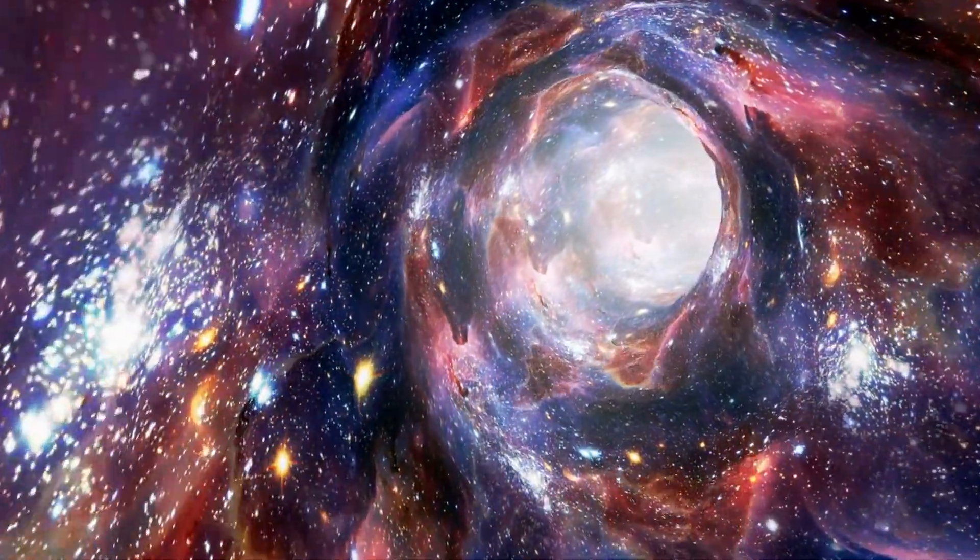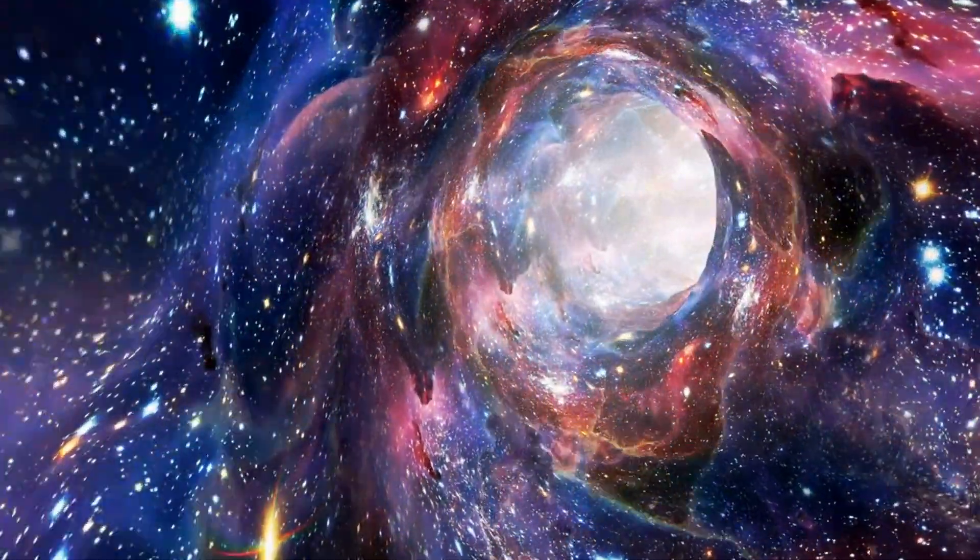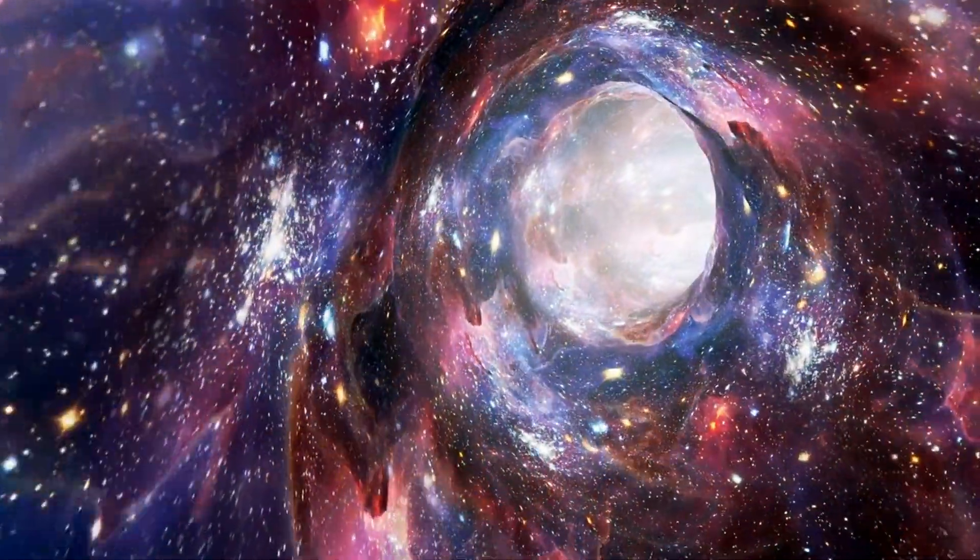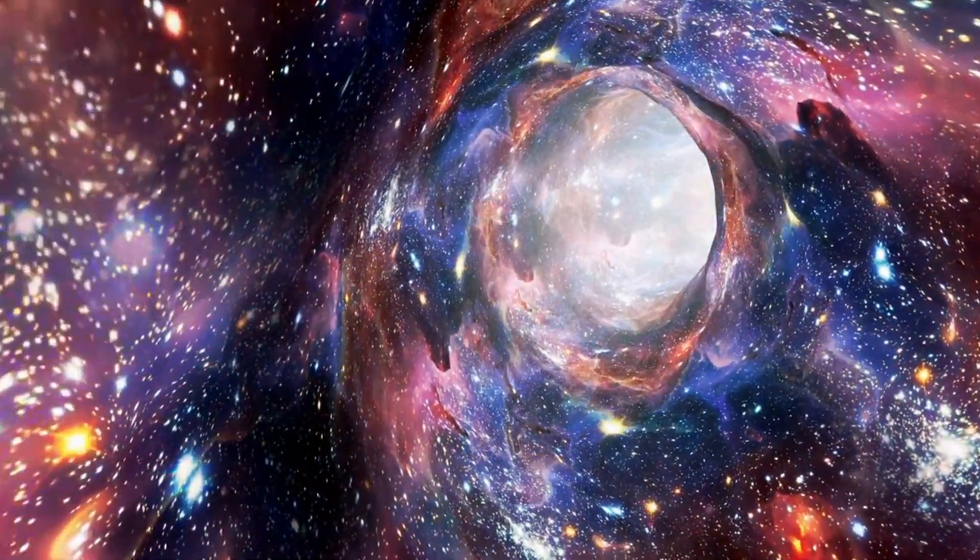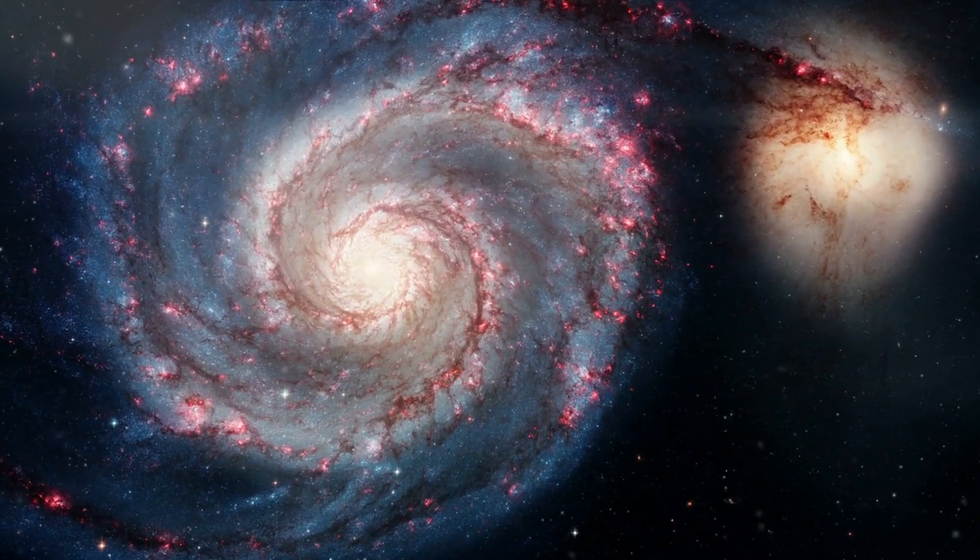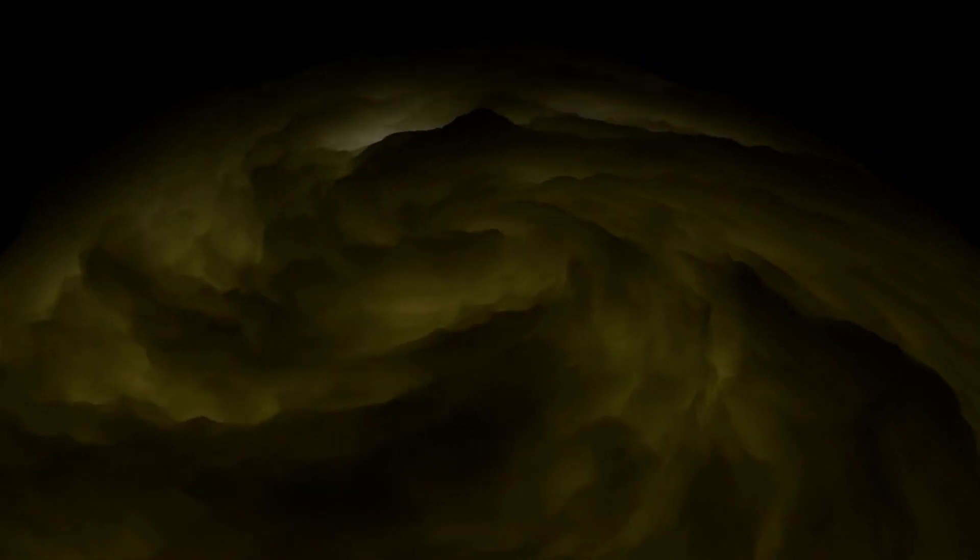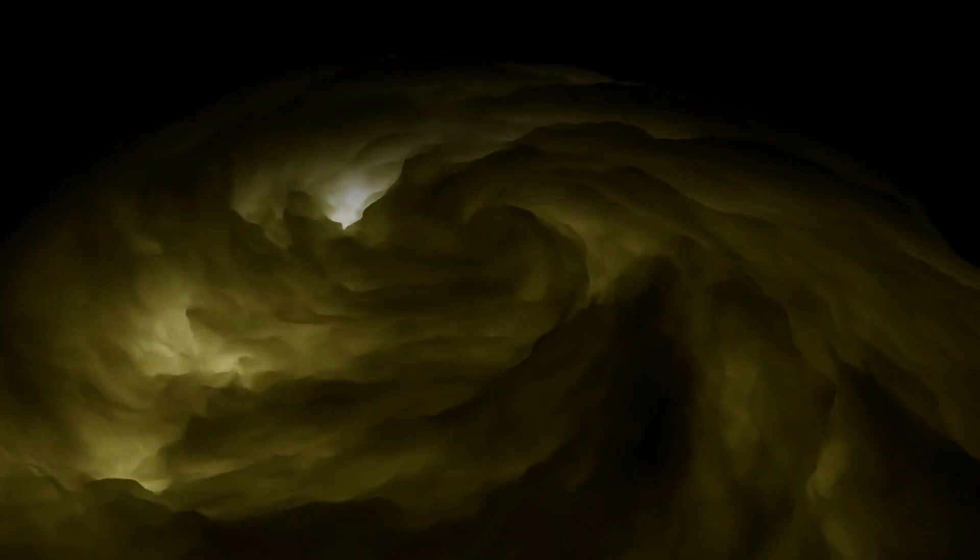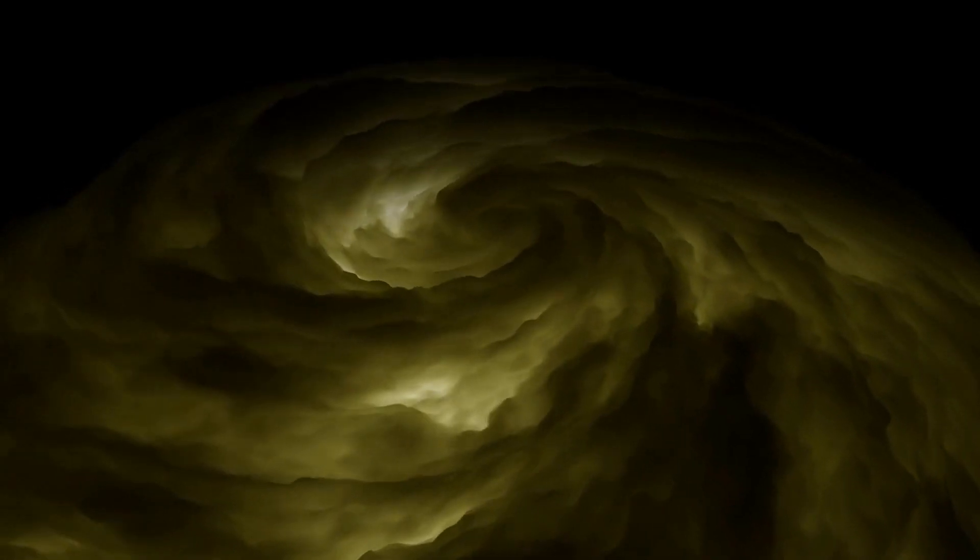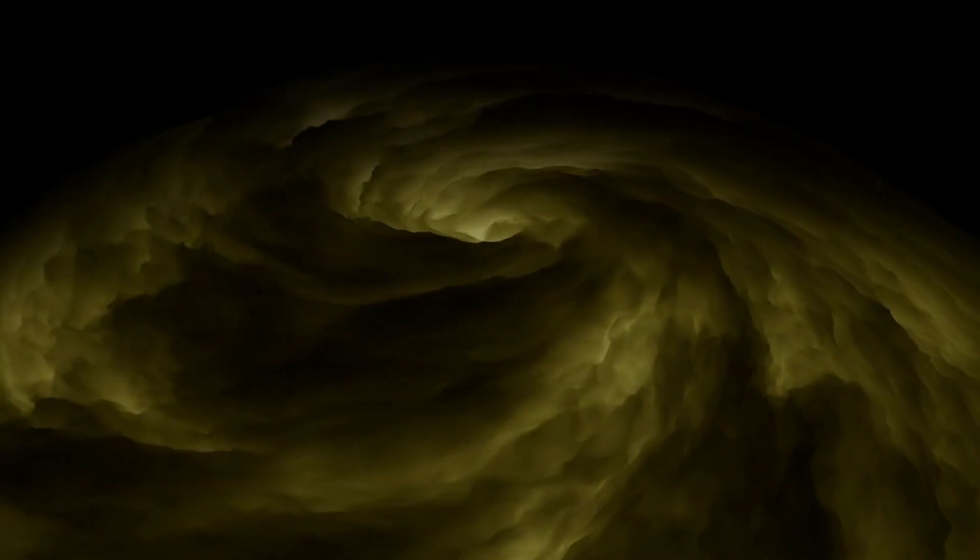The universe we see today is vast, with billions of galaxies spread out across the cosmos. But how did it get this way? The answer, according to the theory of cosmic inflation, lies in a brief period of rapid expansion that occurred just a fraction of a second after the Big Bang.